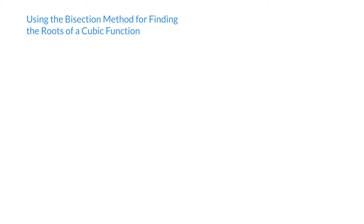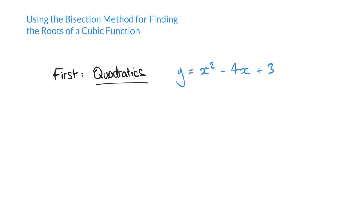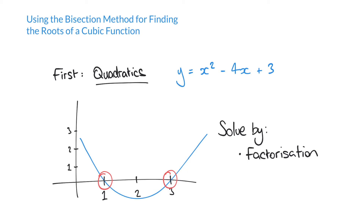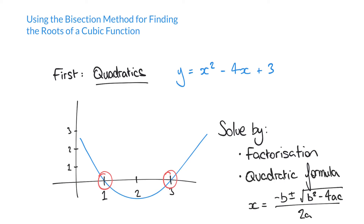Before we move on to talk about cubic functions, let's quickly talk about quadratic functions. Here's an example where we have the function y equals x squared minus 4x plus 3. We can represent a quadratic function graphically, and the roots would be where it crosses the x-axis. For a quadratic function we can factorize the expression to find those roots, or we can use the quadratic formula. When it comes to a cubic function, however, the mathematical methods to find the roots become a lot more difficult.